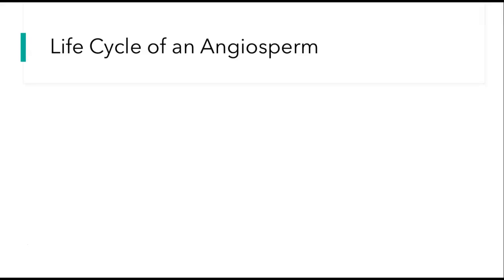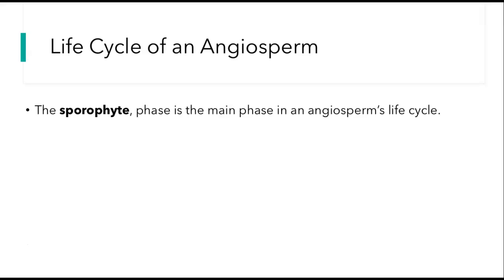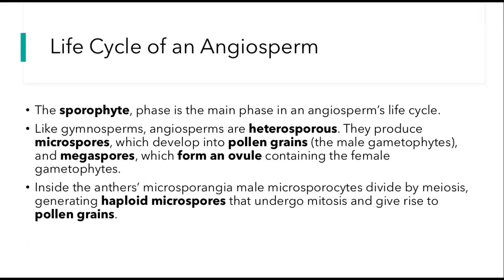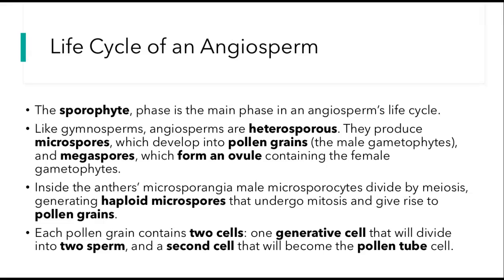This is going to get into some higher-level terminology — the life cycle of an angiosperm. Stick with me and we'll get through it. The sporophyte phase — remember the sporophyte is the diploid phase, and it's the main phase in an angiosperm's life cycle. Like gymnosperms, angiosperms are heterosporous — they produce a male and a female. They produce microspores, the male, which develop in the pollen grains, which are the male gametophytes, and megaspores, which form an ovule containing the female gametophytes. Inside the anthers, microsporangia — the male microsporocytes — divide by meiosis, generating haploid microspores that undergo mitosis and give rise to pollen grains. Each pollen grain contains two cells: the generative cell that will divide into two sperm, and the second cell that will become the pollen tube.